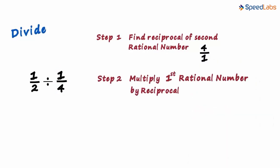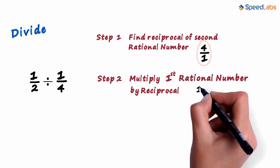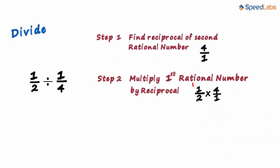In the second step, we multiply the first rational number which is our dividend with this reciprocal. So we multiply one by two with four by one. This is multiplication of two rational numbers.